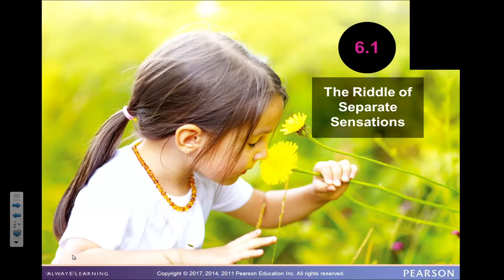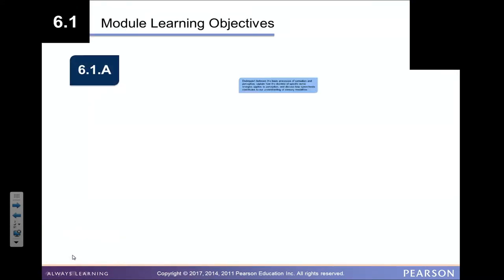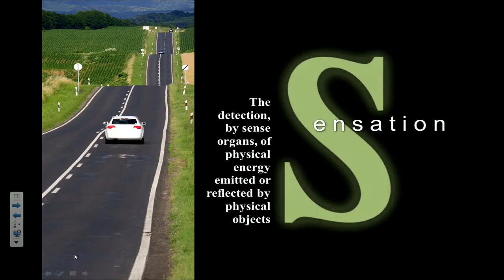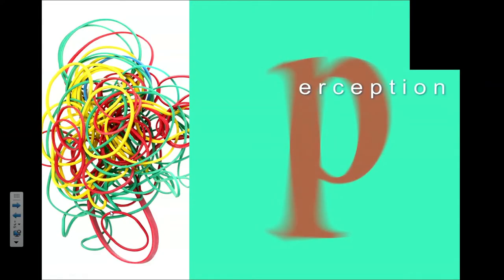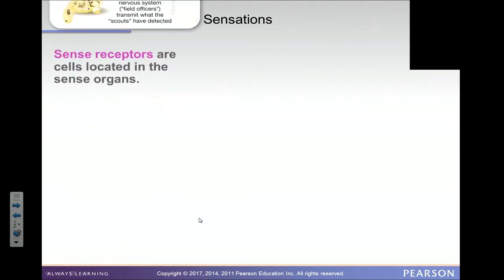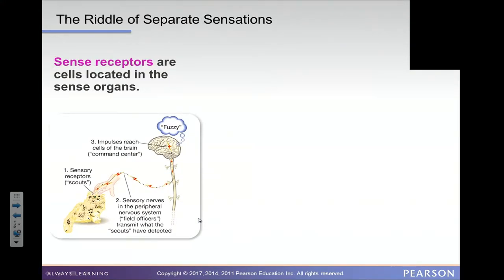Skipping the learning objectives. Sensation is the detection by sense organs of physical energy emitted or reflected by physical objects. Perception, which I've already described as the interpretation or understanding of what just happened in the environment, is stated here as the process by which the brain organizes and interprets sensory information. So, the riddle of separate sensations: how do separate sensations get perceived or interpreted?